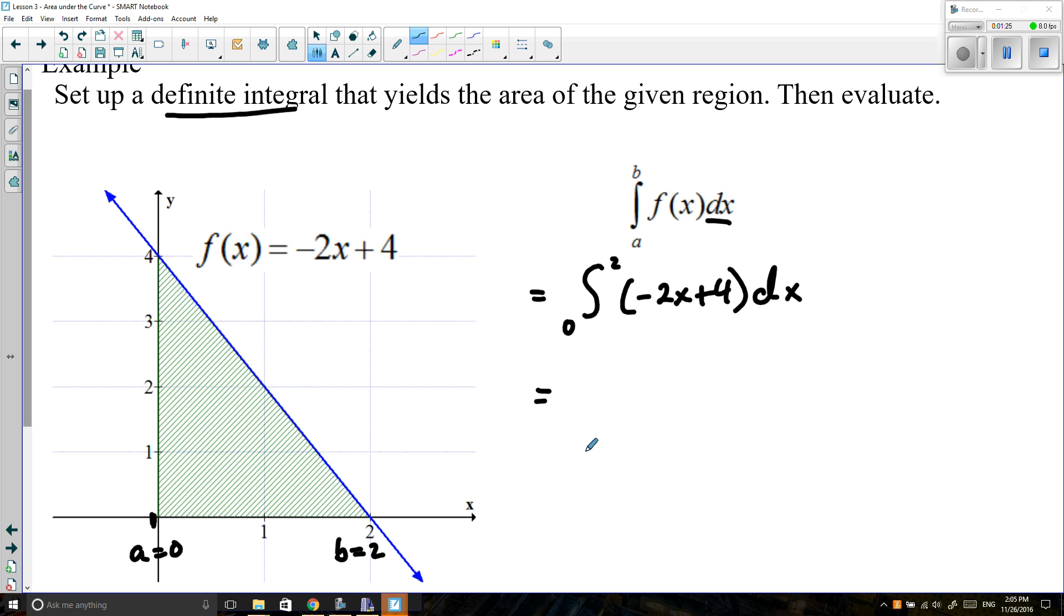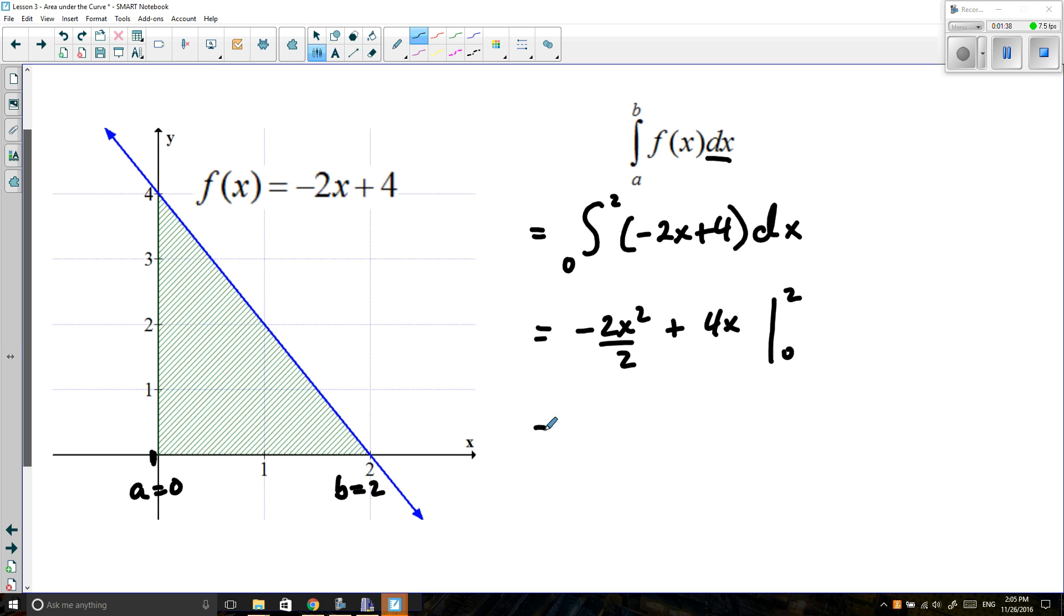We're going to find the antiderivative from here. So my antiderivative of negative 2x is negative 2x squared divided by 2, and then we're going to add 4x. And then we're going from 0 to 2. Now before I evaluate, I can actually simplify this. Negative 2 over 2 reduces to negative 1x squared plus 4x, and once again, we're going from 0 to 2.